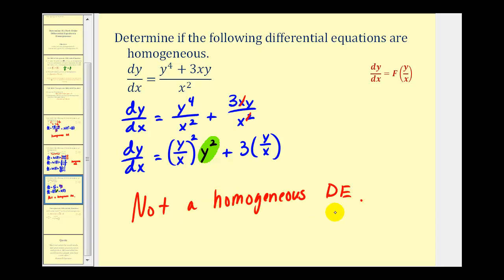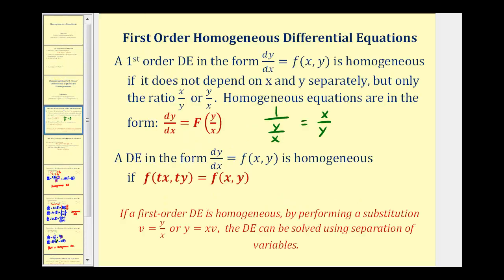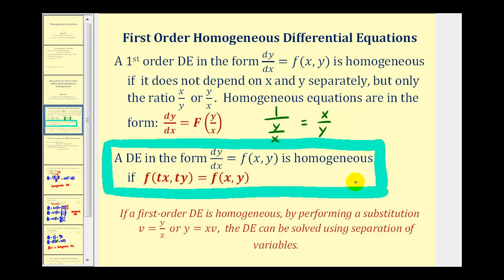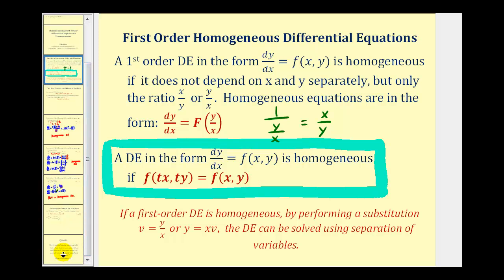That's going to do it for this video. In the next video we'll take a look at one example of showing a first order differential equation as homogeneous using the alternative definition, where the differential equation is homogeneous if f of tx comma ty equals f of x comma y. I hope you found this helpful.